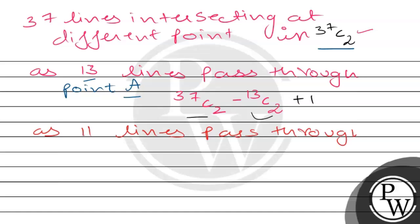Similarly, 11 lines pass through point B. We have already counted these 2 times in 37C2. So we subtract 11C2 and add back 1 for point B.